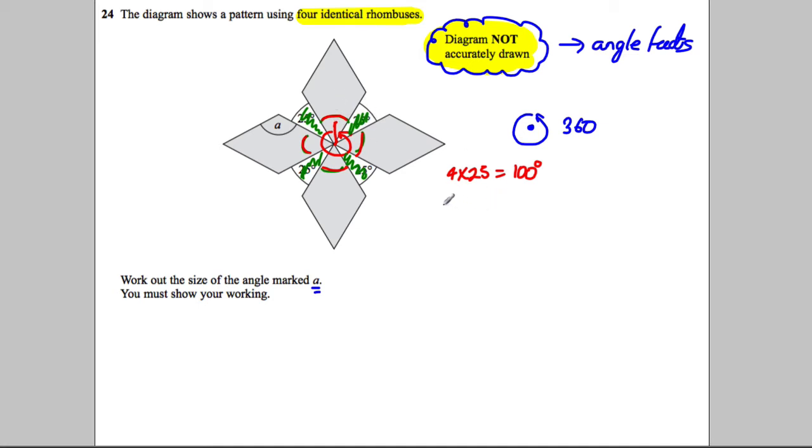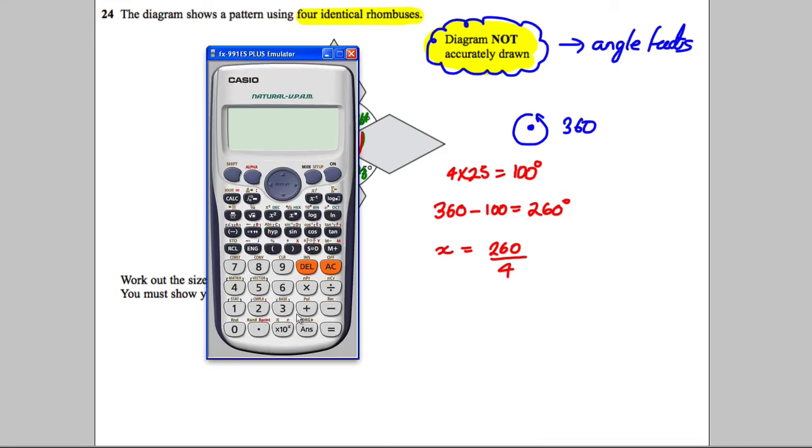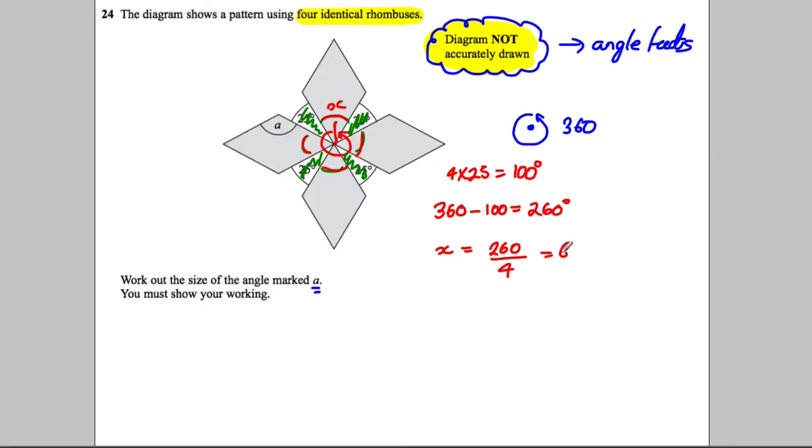Then these angles here, which I'm going to call X, therefore must be equal to 360 subtract 100, must be equal to 260 degrees. So each of these angles, there's four of these and they're equal to 260, so each one must be 260 divided by 4. So 260 divided by 4 is equal to 65 degrees.